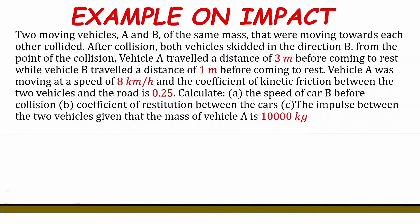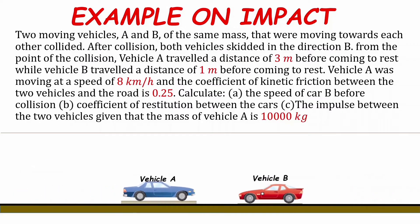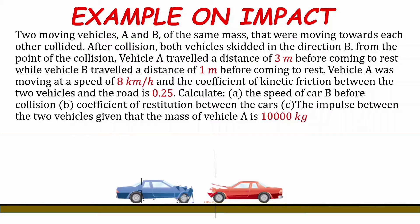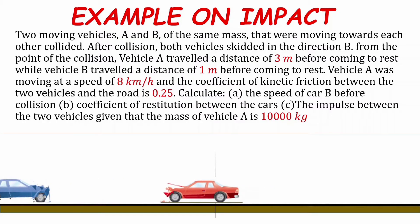So we have on the road two vehicles, vehicle A and vehicle B. They were moving towards each other. They collided, and then we're given some information after the collision. Vehicle A moves backwards 3 meters while vehicle B moves just 1 meter forward.